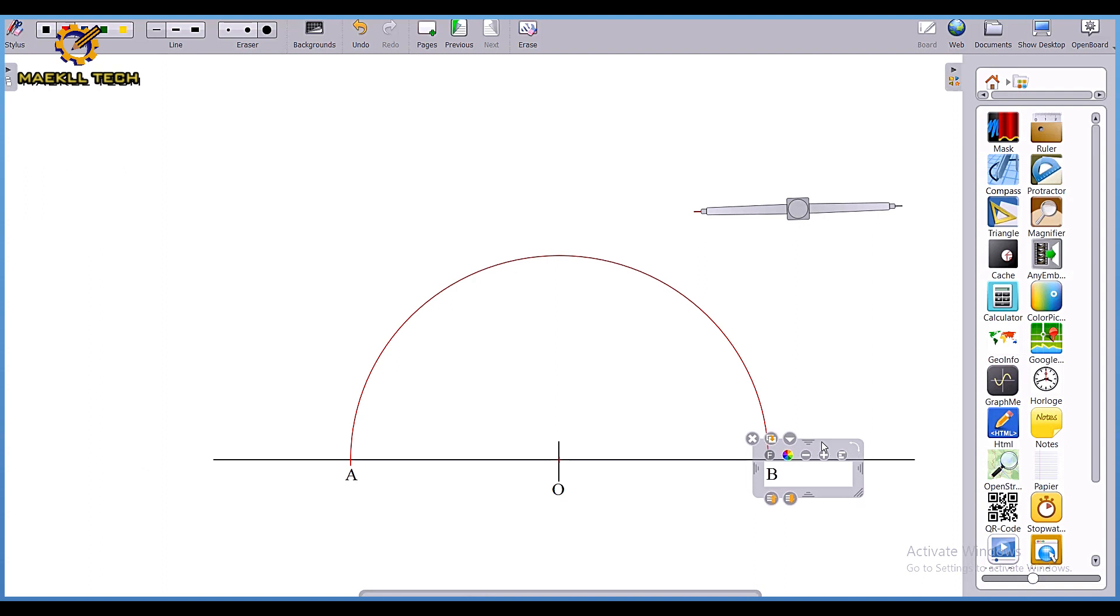What is the next procedure? I'm going to extend my compass, applying that simple bisection we did earlier. I will extend my compass a little bit further from the initial length. I've increased the length of my compass to anything you desire.